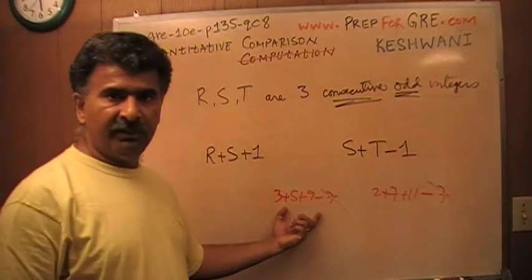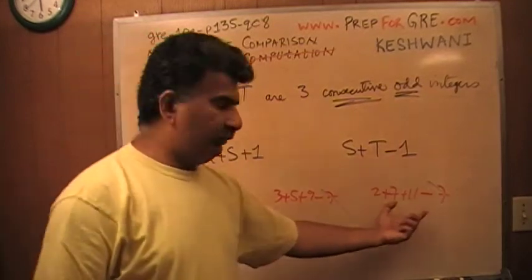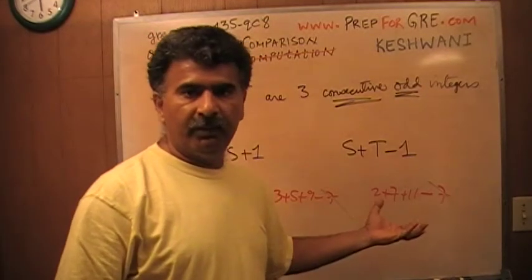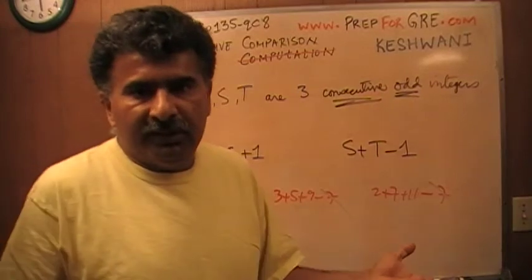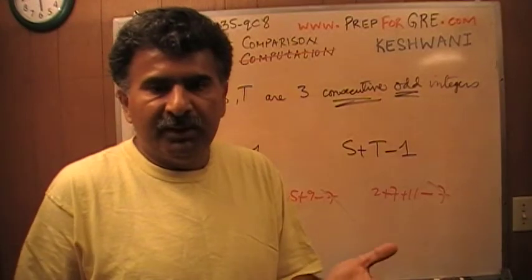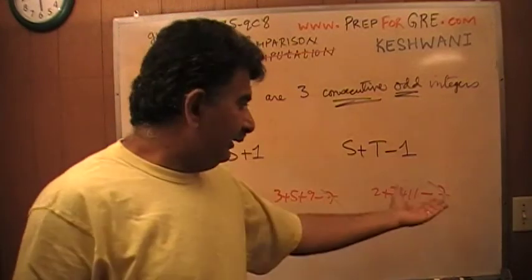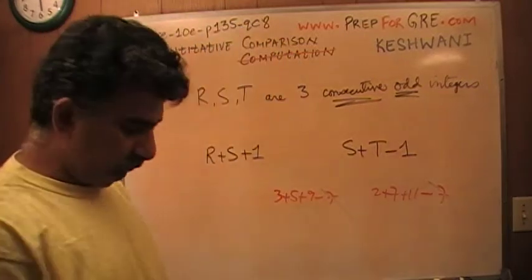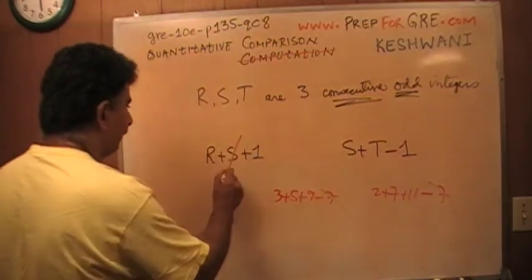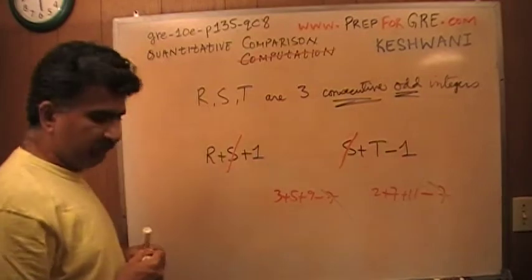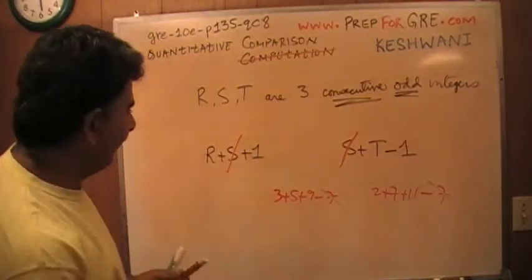Whatever quantity this was, you are taking 7 away from it, and whatever quantity this was, you are taking 7 away from it. So their relative position does not change. We are trying to figure out which quantity is bigger. The 7 is not going to play any role. So the very first thing I'm going to do here is get rid of this S. It plays no role.